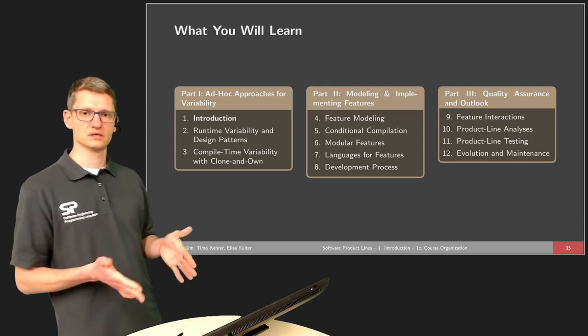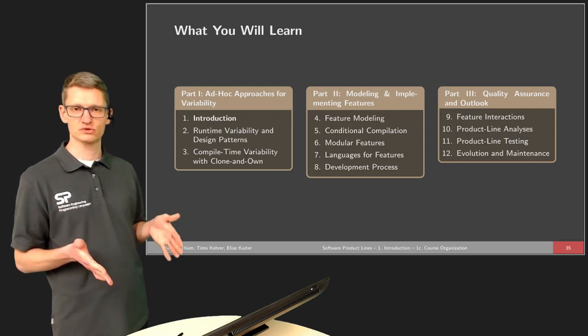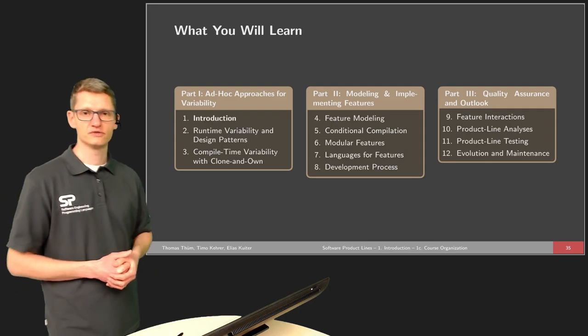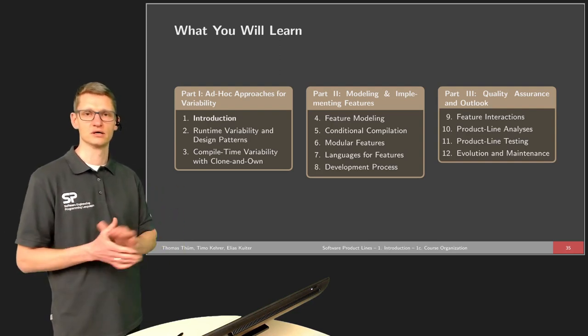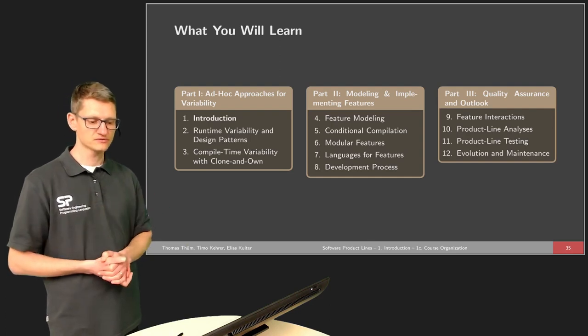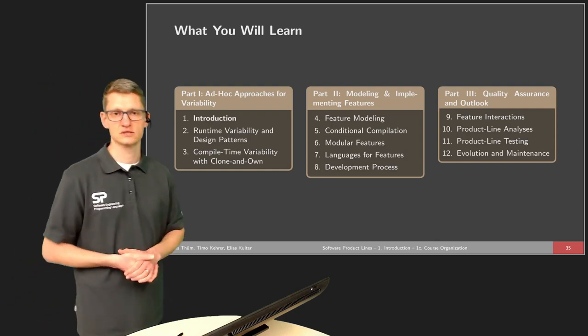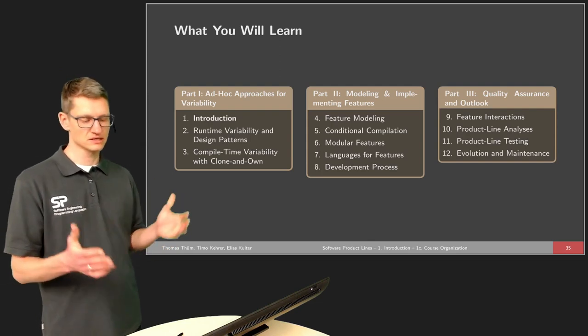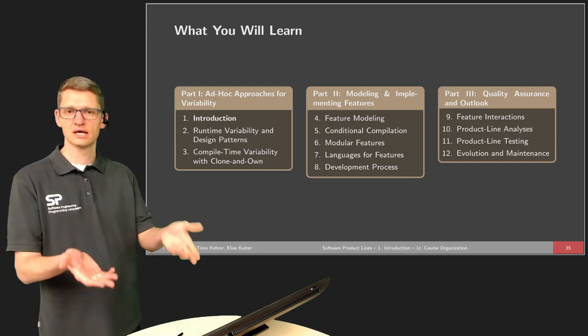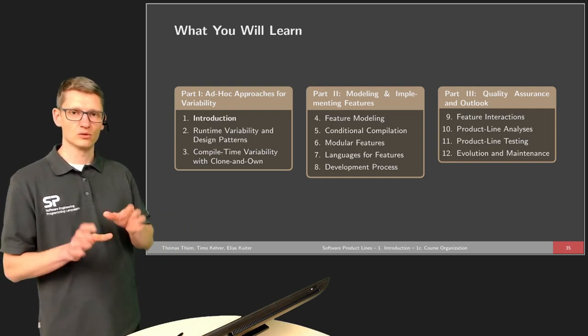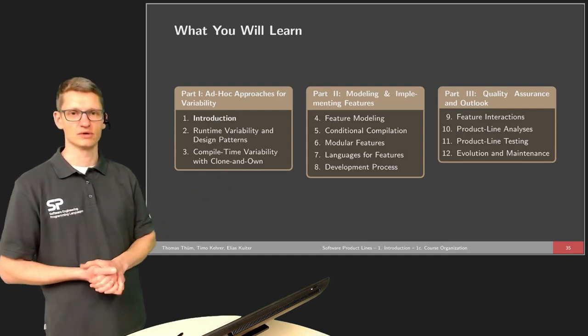What we actually want in most cases when we talk about software product lines is the vision that we can freely combine features to derive particular customized products. That's why in the second part of the lecture series we will focus on how to model and implement features. Feature is the central concept. And in lecture four we will talk about feature modeling as a technique, how to specify what are the valid combinations of features. We will also look at propositional formulas and whether they are equivalent or not. And then in lectures five, six and seven we will discuss in detail many implementation techniques that are out there. So every of these three lectures has a number of different techniques in there that can be used. They are grouped whether they use conditional compilation, which means that at compile time we can actually fix the features that we want, and then we can generate different products.